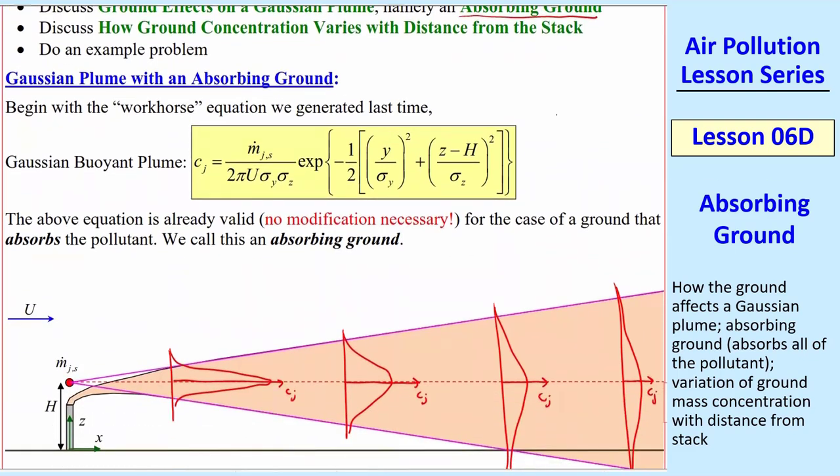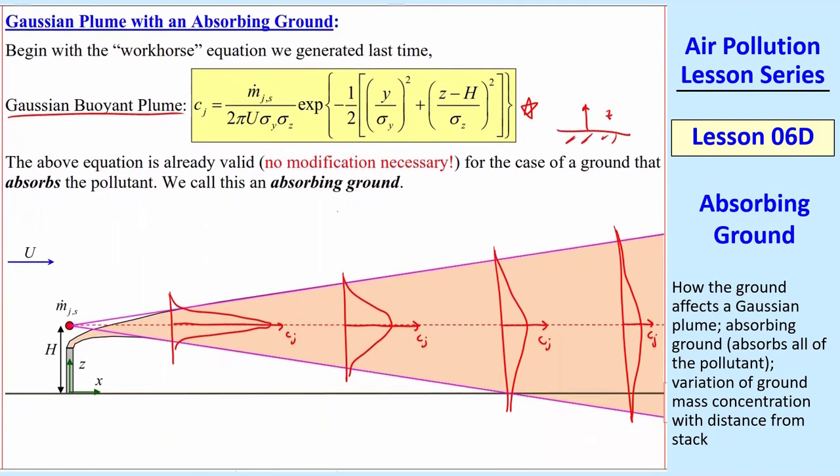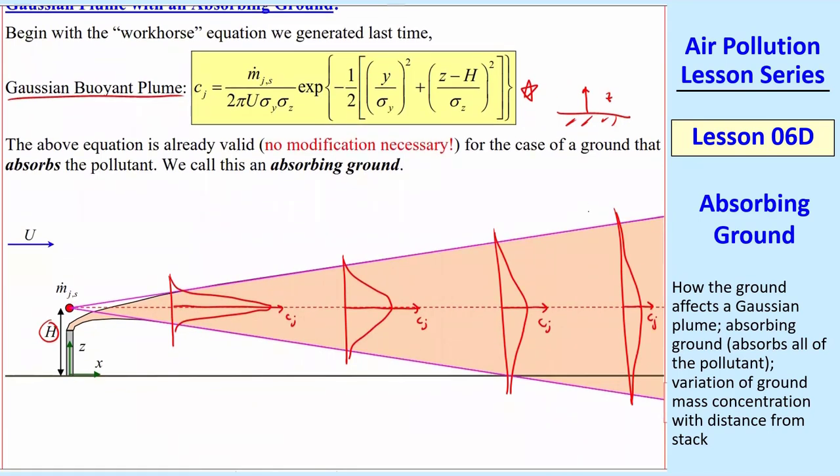So let's start with our workhorse equation from last time, and this one was for a Gaussian buoyant plume with z being defined from the ground, and capital H, remember, was both the stack height and the effect of buoyancy, so we stuck a source up there. We want to look at the case where the ground is absorbing. We call that absorbing ground.